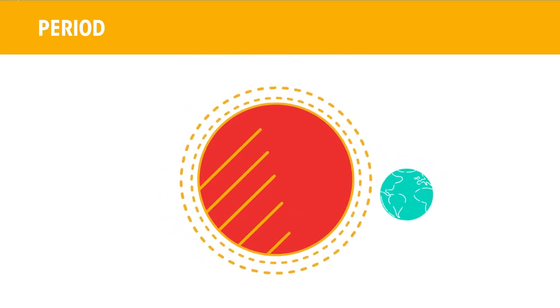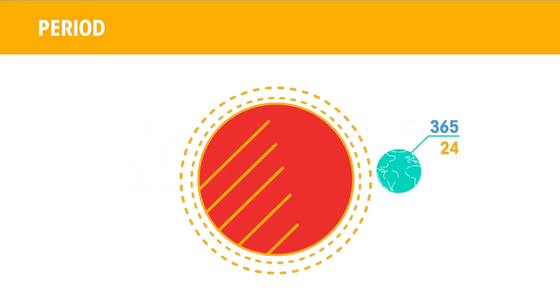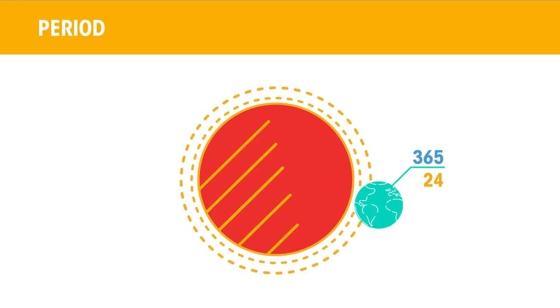When something happens repeatedly, we say that the event is periodic, and refer to the time for the event to repeat itself. The period of the Earth to orbit the Sun is 365 days. The period of a day is 24 hours. The period of a typical class at school is 45 minutes.